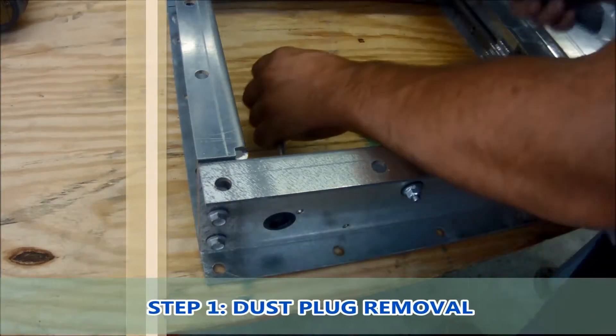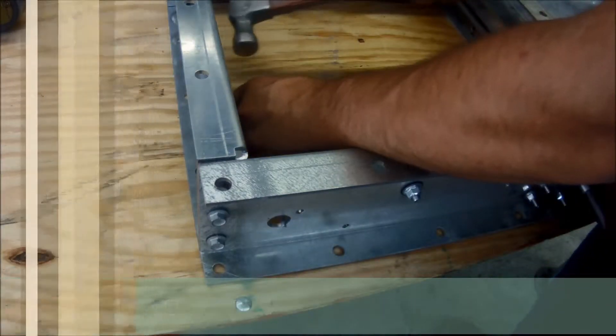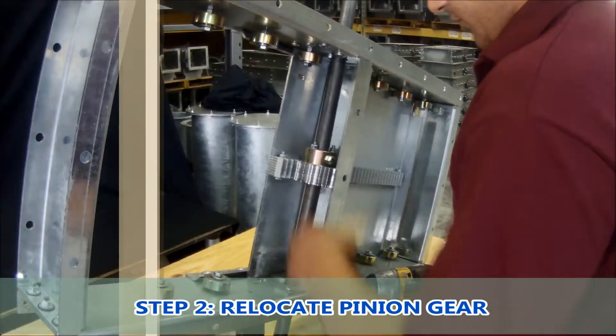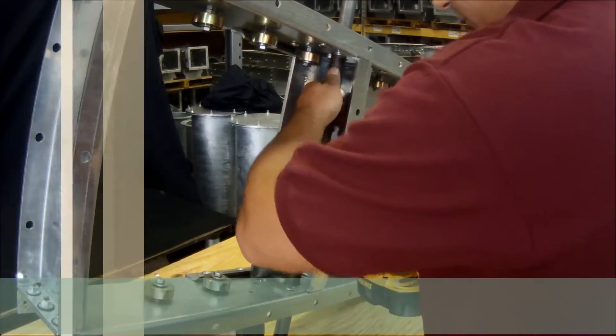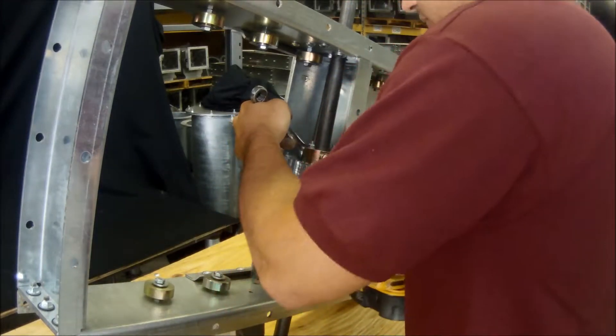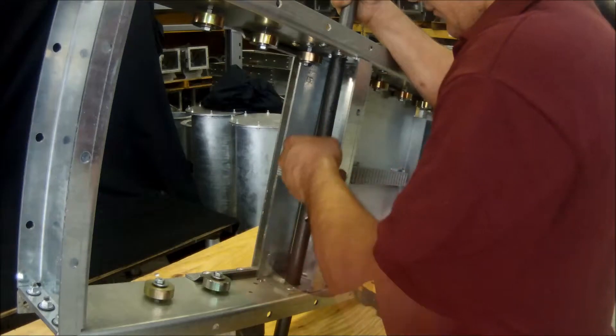So to start we're going to take the dust seals and remove them from both sides of the gate. Next we will have to relocate the pinion gear. This is done by using a 9/16 wrench or socket and removing the bolt that holds the hub to the shaft.